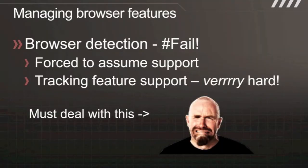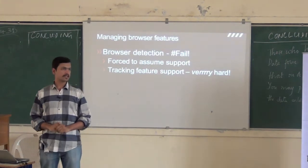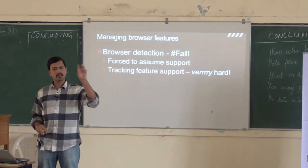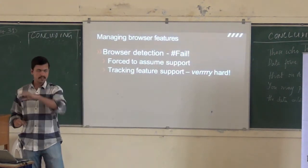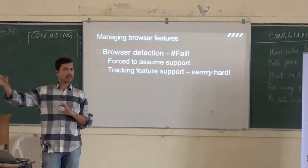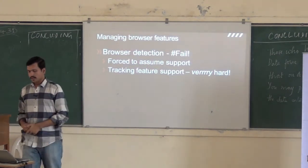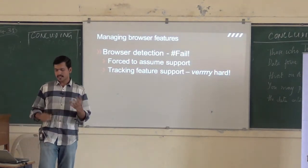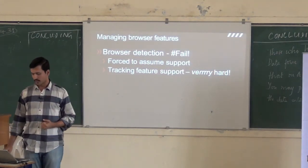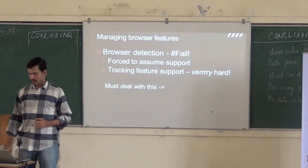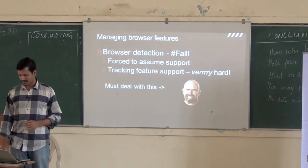This is something that we've been doing — browser detection. We've been trying to write code which says: is the browser this particular brand and is it this particular version, then I write a particular kind of code. That means that you have to essentially track feature support. This sort of thing can make grown men cry.